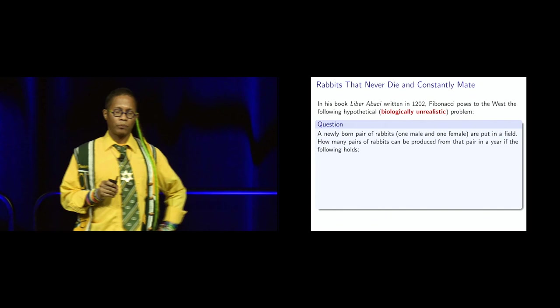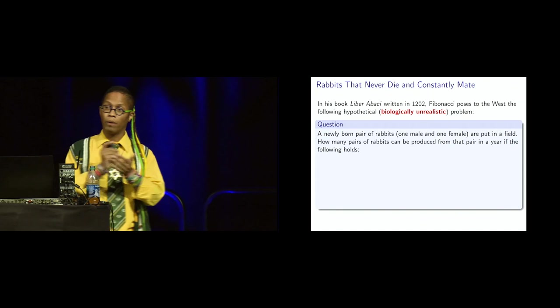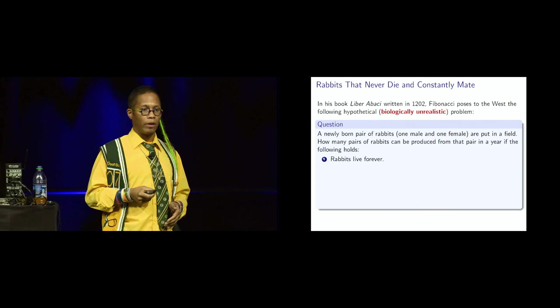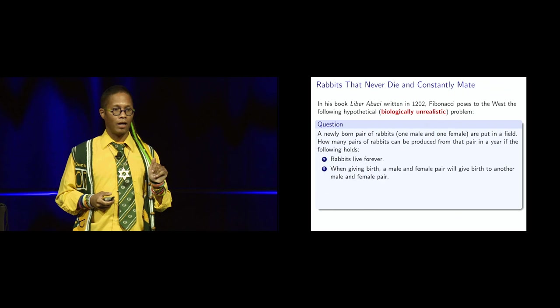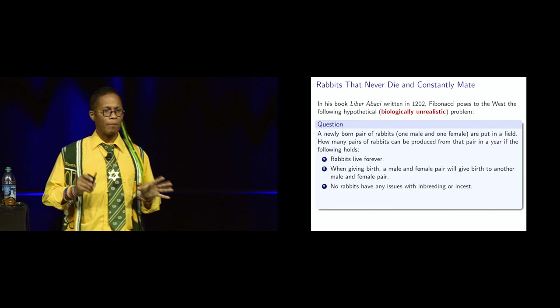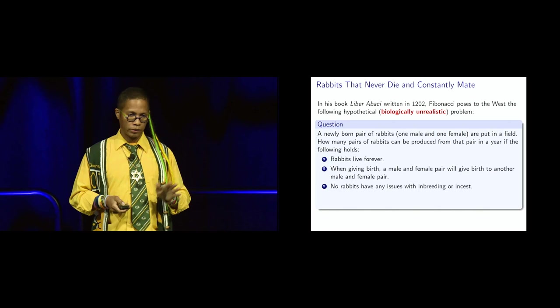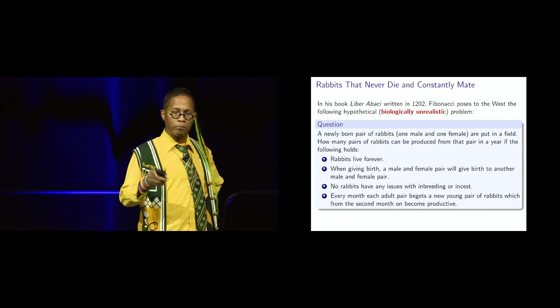he posed a problem in his famous text, Libra Robaci, in 1202. This is hypothetical and extremely biologically unrealistic, but we have a newborn pair of rabbits, one male, one female, and they're put into a field, and then the question asked in this text was how many rabbits can be produced from that one pair in a year if the following constraints hold? Constraint one, the rabbits live forever. That's not possible, but rabbits live forever. When giving birth, a male and female pair of rabbits will give birth to another male and female pair. Also not realistic. No rabbits have any issues with inbreeding or incest.